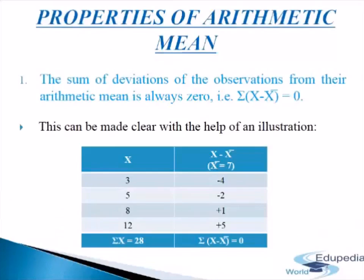Properties of arithmetic mean. The first property: the sum of deviations of the observations from the arithmetic mean is always 0. That is, sigma(x minus x-bar) equals 0, where x is the variable and x-bar is the arithmetic mean. This happens because arithmetic mean is a point of balance — the sum of positive deviations from the mean equals the sum of negative deviations. Due to this property, arithmetic mean is characterized as the center of gravity.